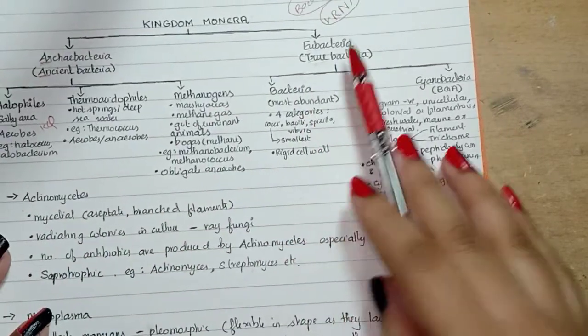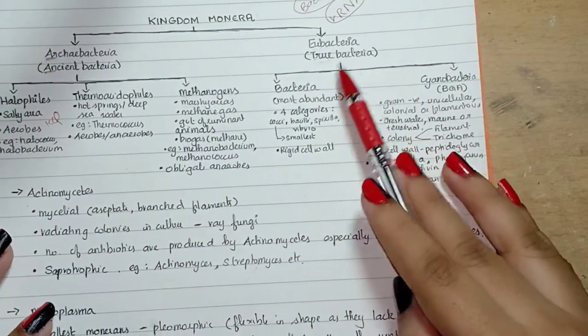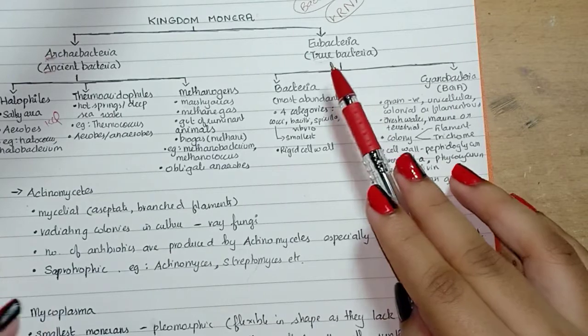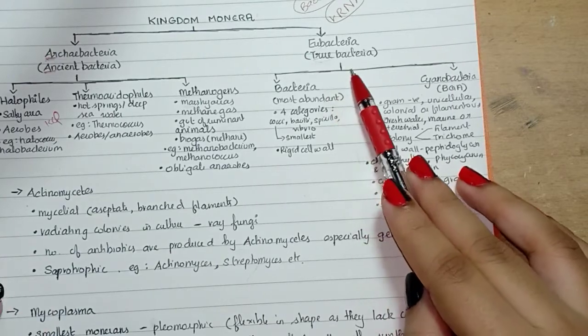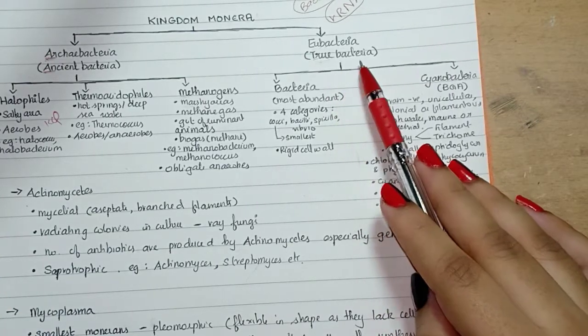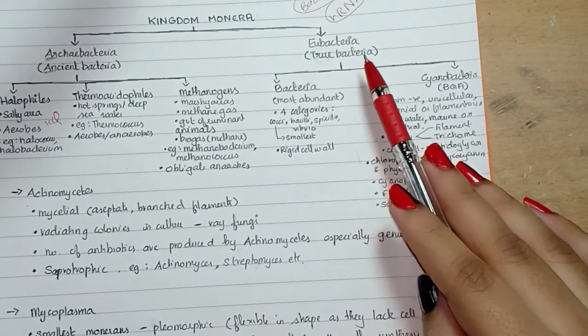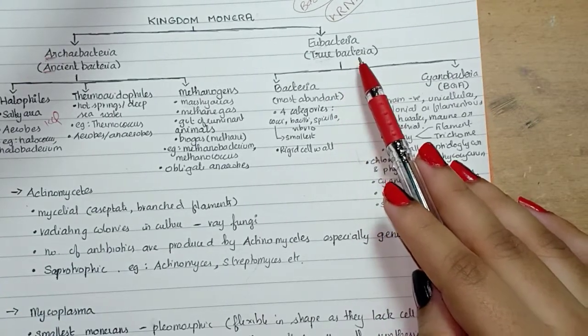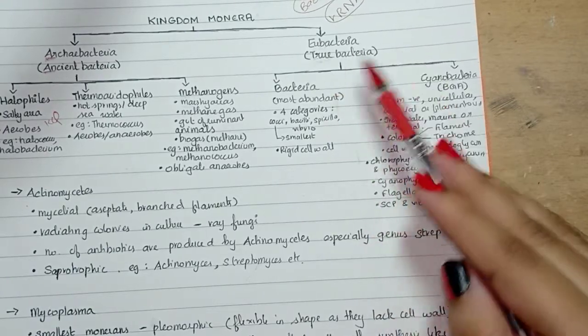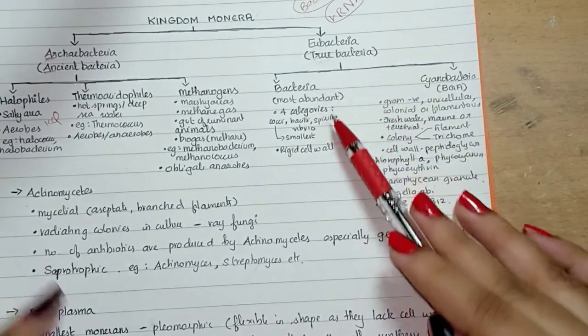Now we have eubacteria — that is true bacteria. They are characterized by the presence of a rigid cell wall, and if they are motile, they have a flagellum.